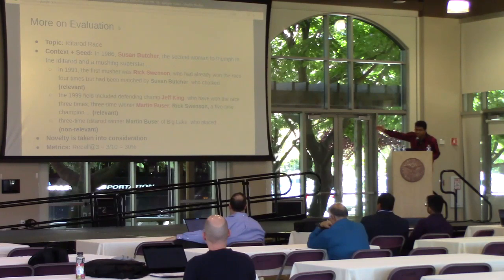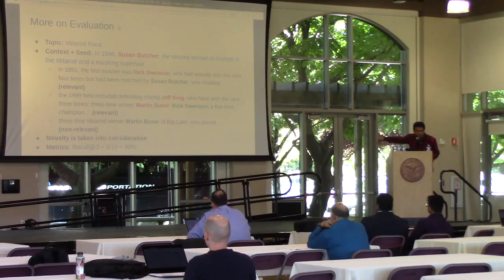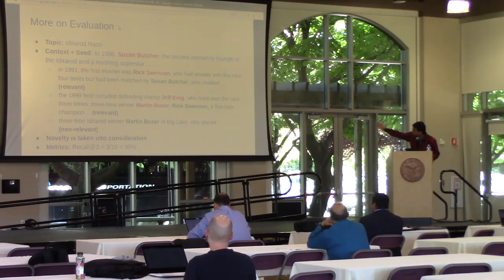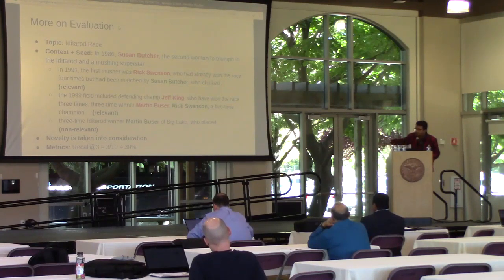From the user's perspective, the user has already seen Martin Buser, so there is no benefit of bringing it again. We want sentences that contain novel entities. And once you have this relevant and non-relevant definition, you can compute MAP. But in our case, we are more interested in entity recall at top-K sentences. If you see that there are three new entities retrieved in these three sentences, and assuming there are 10 list entities total, only 30% of the entities could be retrieved in the top three sentences.